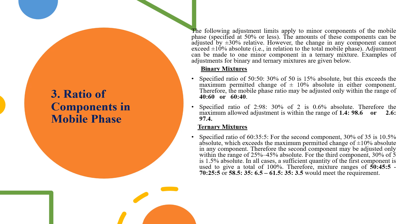The adjustment of the composition of the mobile phase applies to the minor components of the mobile phase specified at 50% or less. The amounts of these components can be adjusted by plus or minus 30%. However, the change in any component cannot exceed 10% of absolute value.